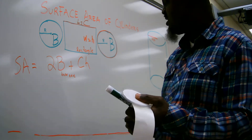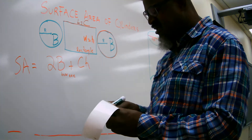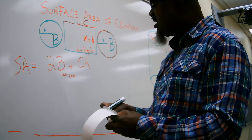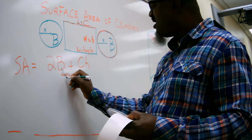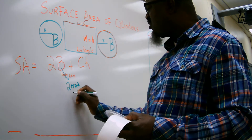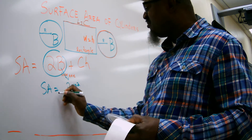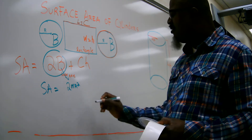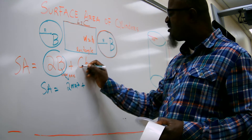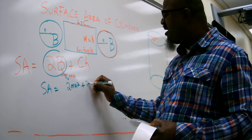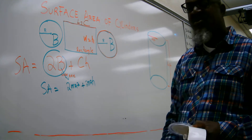Let's break this down. This is the area of the base — the base is the circle. We know how to find the area of a circle: area of a circle is πr². Since we have two of them, you multiply by two, giving 2πr² for the area of the two bases. Plus, C is circumference. The circumference of the circle is 2πr, then you multiply by the height H. That gives you the total surface area of the cylinder — this is how you arrive at the formula.